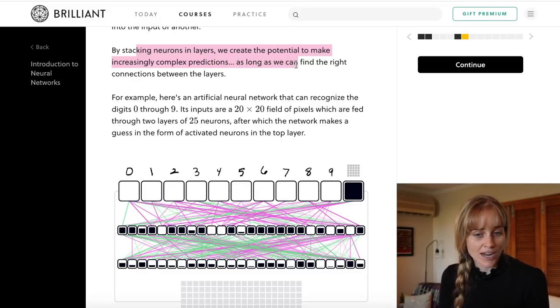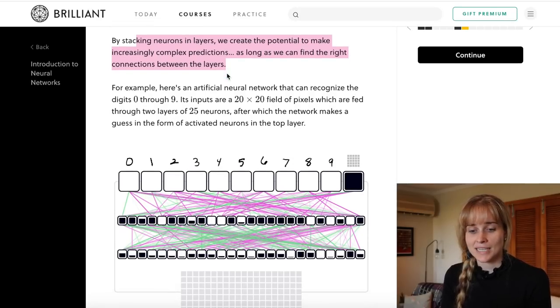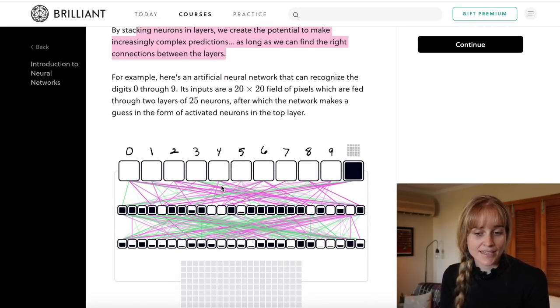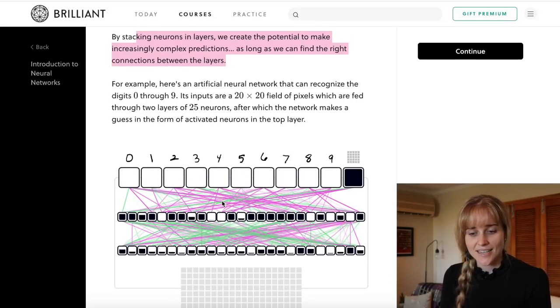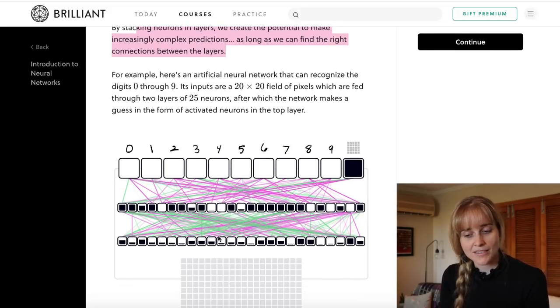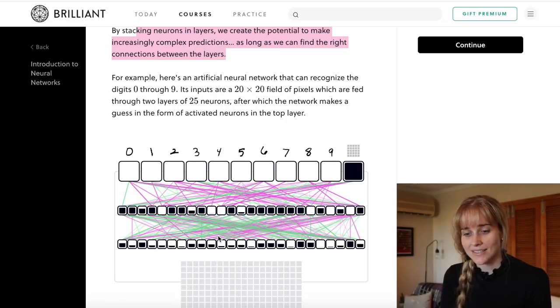It says here that by stacking neurons in layers we create the potential to make increasingly complex predictions, as long as we can find the right connections between the layers. And that's what it seems to come down to, forming these correct connections with the correct weights to know what inputs we want to cascade throughout the network.